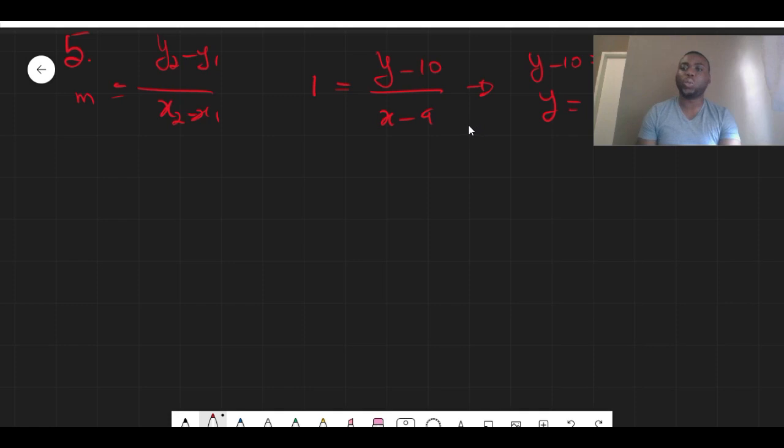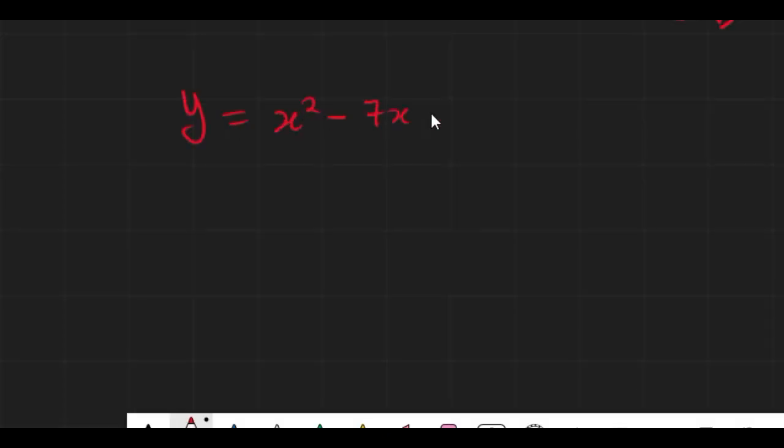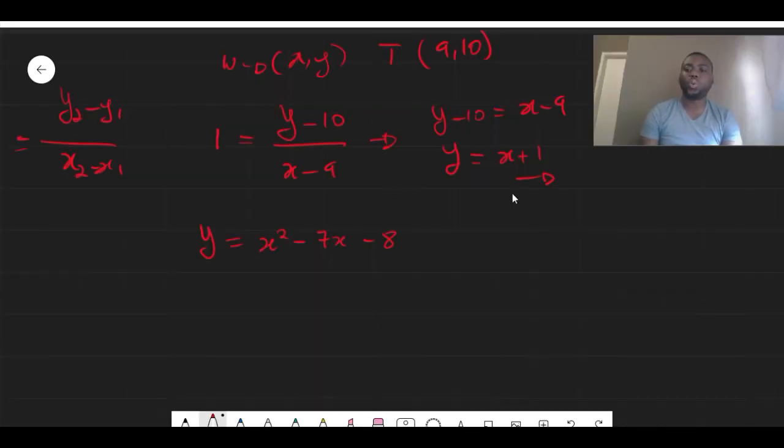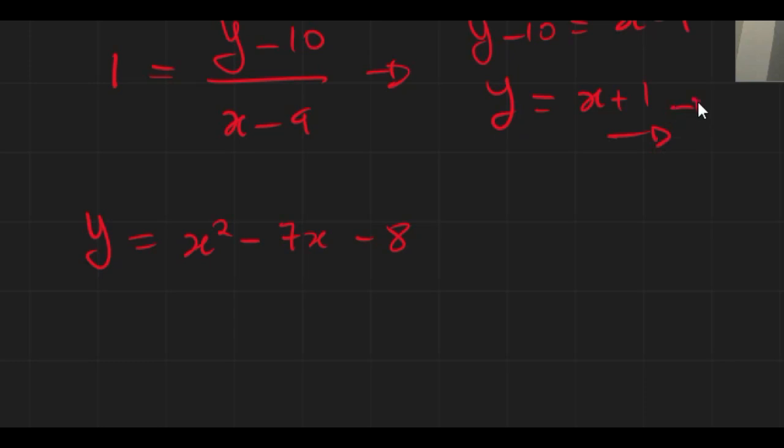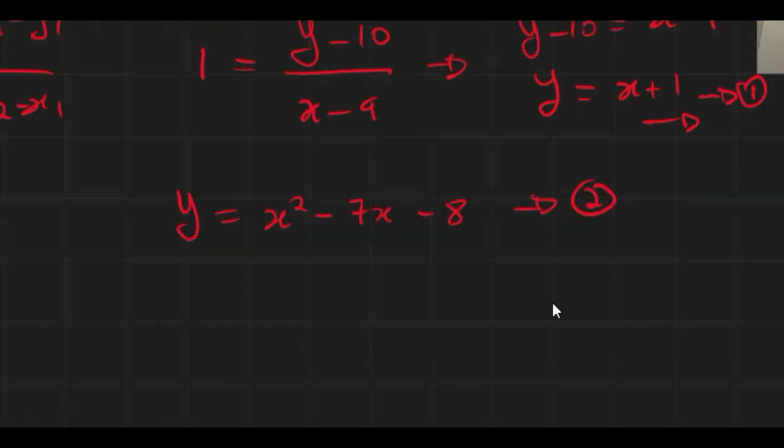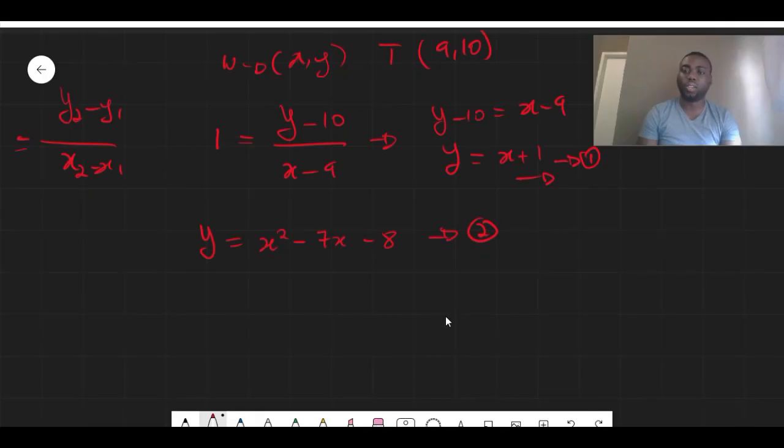Because it's also on our parabola, which is f, we can substitute x and y into our parabola as well. So now from here we'll notice that we have two equations: the first equation being our straight line and the second equation being our parabola.